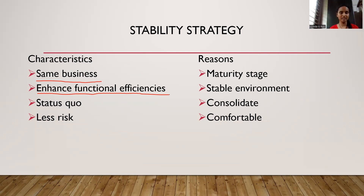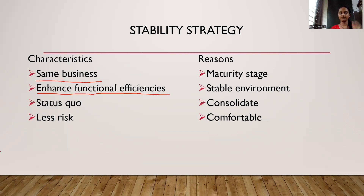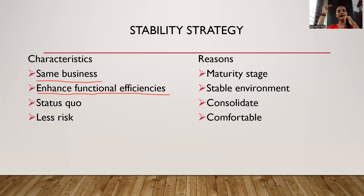The difference between effectiveness and efficiency is well known: effectiveness is giving 100% focused on the result, whereas efficiency is effectiveness with the time factor being considered. Next important characteristic feature of stability strategy is status quo — they want to maintain the status level. And one more basic feature is that there is less risk involved, because you don't want to grow to higher opportunities or move up the ladder.